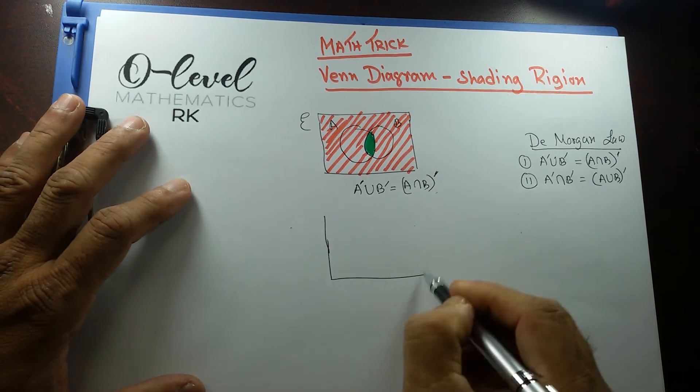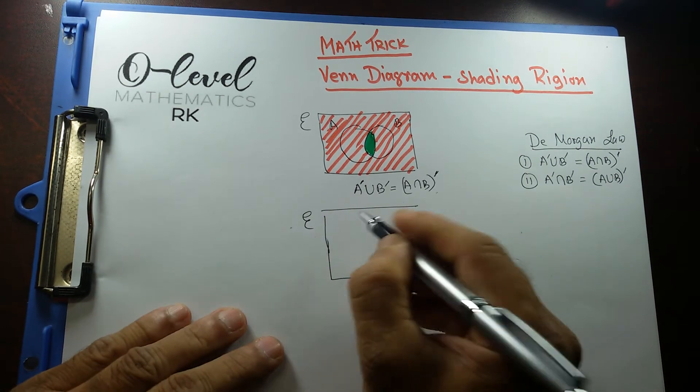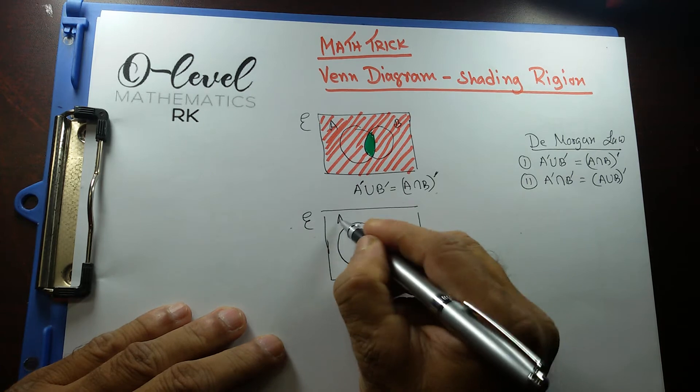But if we have anything like this, I'm going to use the second rule. Again, universal set. And then I have two overlapping circles, A and B.